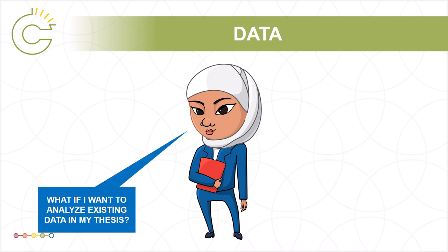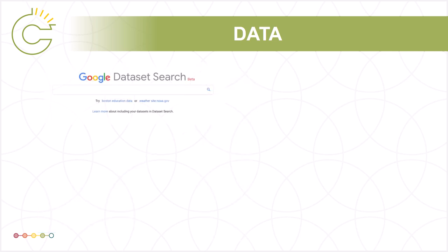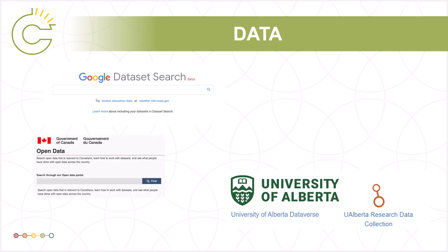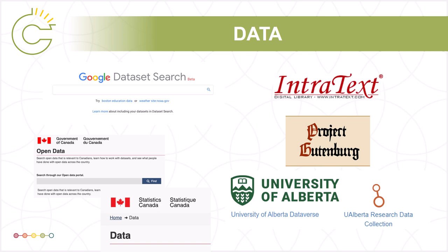Maybe Ira is looking for some openly licensed data to work with. She might want to try Google's new dataset search tool, her local institutional repository like Dataverse, open data portals like the one from Statistics Canada, or free text archives like Project Gutenberg and Intratext.